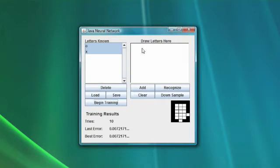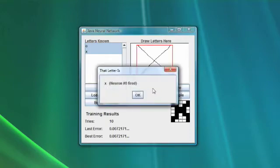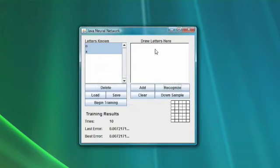Now let's try it out. Let's draw a letter. We need to draw one of the two letters that we just trained it with. We are going to draw an X. Click recognize and it will tell you what it thinks you drew. It tells you it thinks you drew an X. Neuron zero fired. Neuron zero is the one that handles the X group.